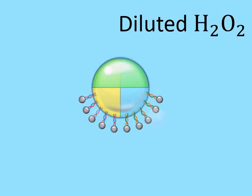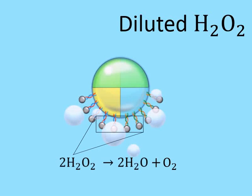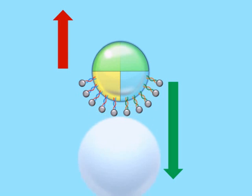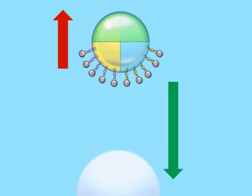First, in a diluted H2O2 solution, our rocket produces oxygen bubbles through catalytic reaction. The detachment of the bubbles forces the rocket to move in the opposite direction.